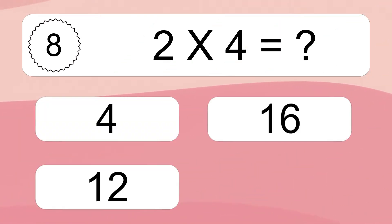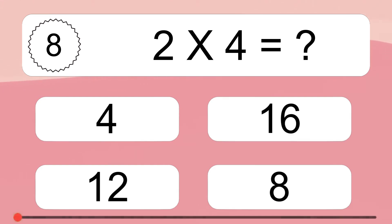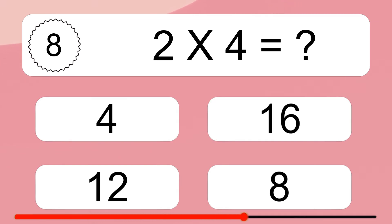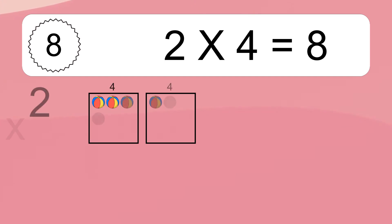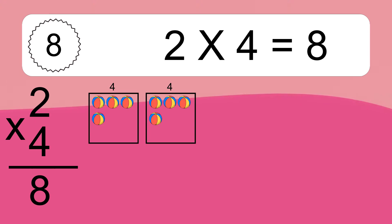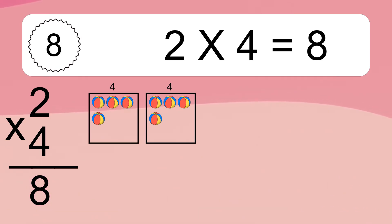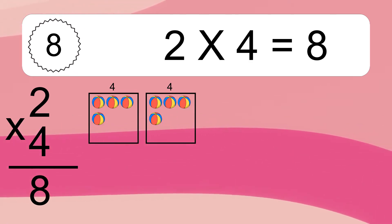2 times 4 equals what? 2 times 4 equals 8. We have 2 boxes and each box has 4 colorful balls inside. If you count all the balls in all the boxes together, you will have 2 times 4 balls. This equals 8 balls.